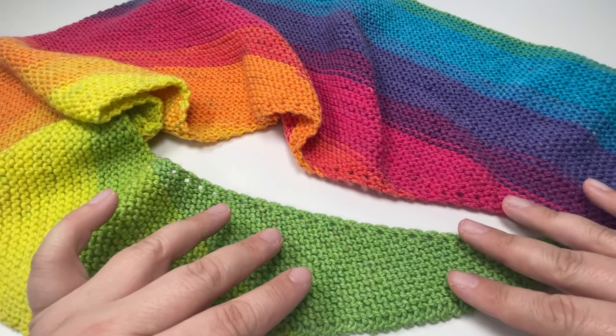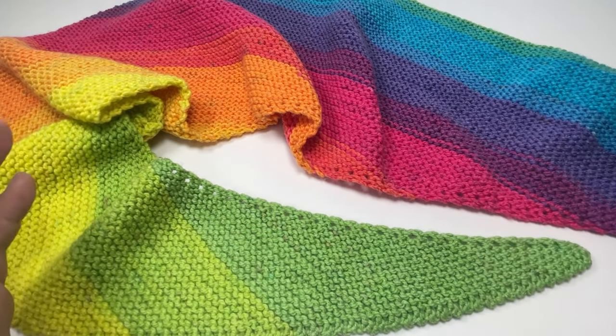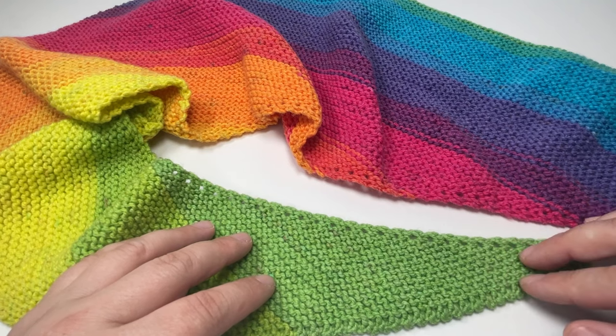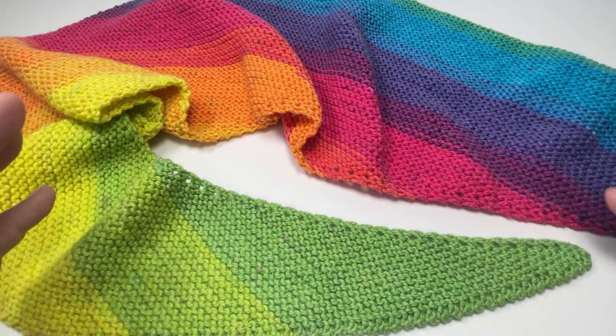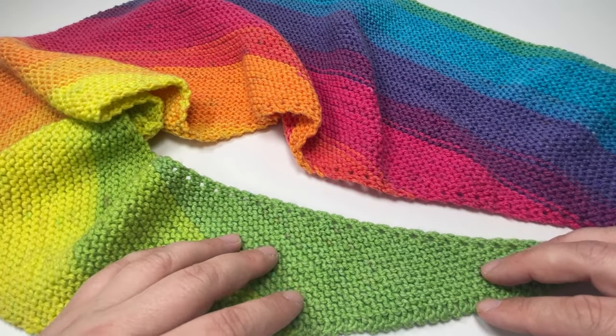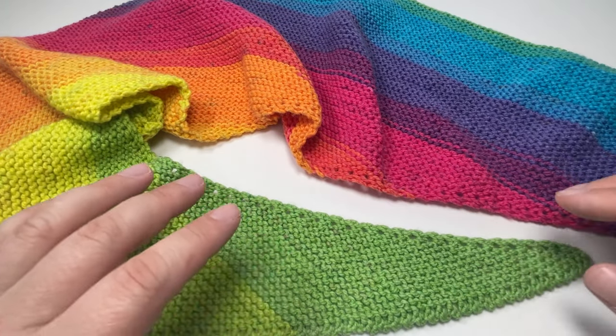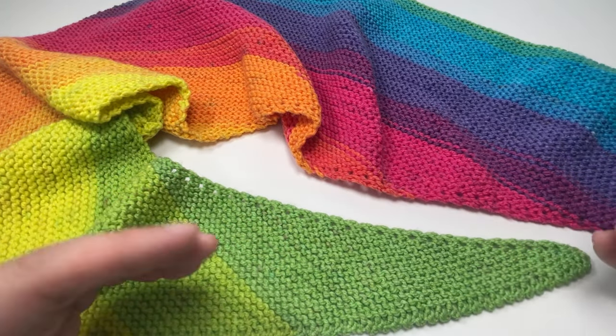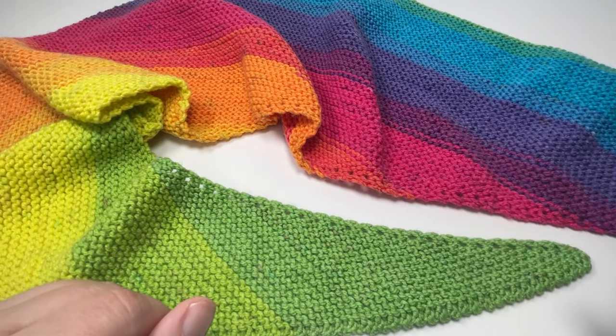To knit this shawl you are going to need some circular needles about 80 centimeters will be enough, and you're going to need yarn in the appropriate weight and shade that you want to use. I use double knit yarn but don't let that stop you from using any yarn you like. So without further ado let's jump in and get knitting this shawl.